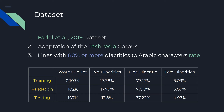When we talk about machine learning and neural networks, the first big concern we have is the datasets — are they available and are they big enough? For the diacritization problem, the only available and free dataset is Tashkila Corpus. In the Fadel 2019 paper, an adaptation from Tashkila was made by cleaning the data and extracting lines with 80% or more diacritics to Arabic characters' rate. More details about this dataset are available in the paper.